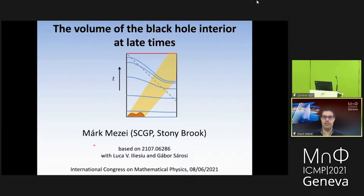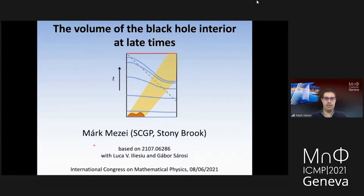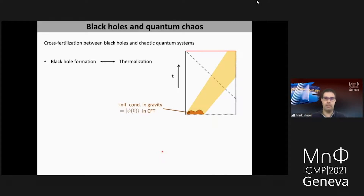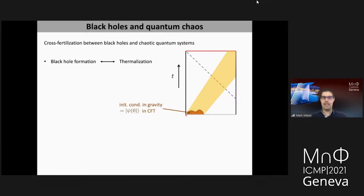This talk will be based on a paper that appeared a couple of weeks ago with Luca Iliesiu and Gabo Sárosi. In recent years, there has been exciting cross-fertilization between black holes and chaotic quantum systems within the framework of ADS-CFT. A particularly fruitful endeavor is to try to identify ubiquitous features in the gravitational description and then understand what they mean for the dual field theory. One generic behavior of gravity in ADS spacetime is that generic initial conditions lead to formation of a black hole — the matter collapses toward the middle of ADS and forms a black hole. This process of black hole formation corresponds to thermalization in the dual quantum system.